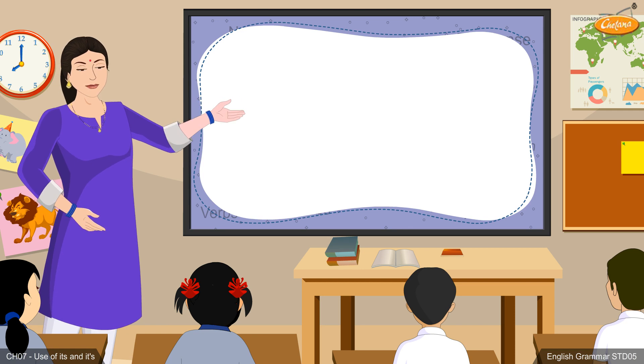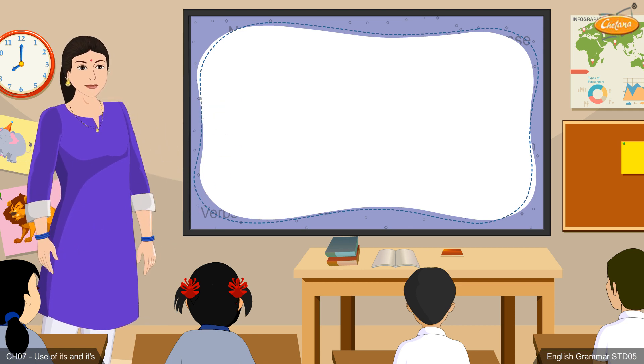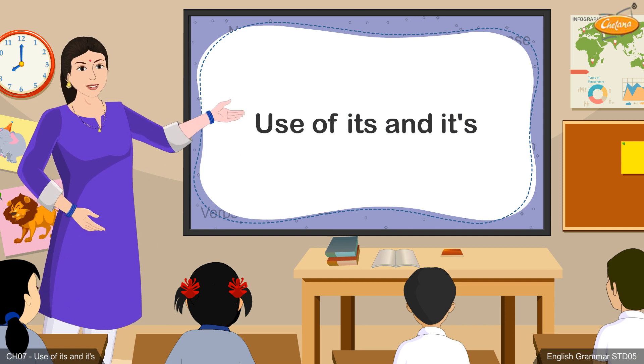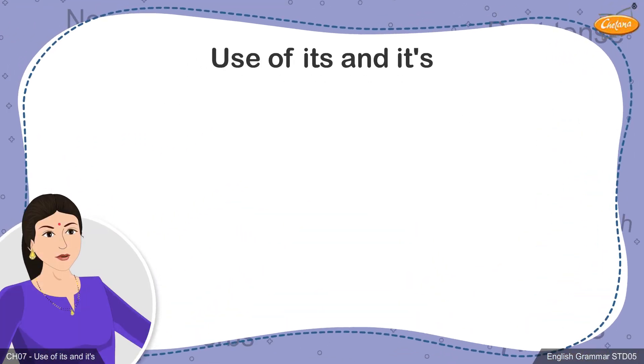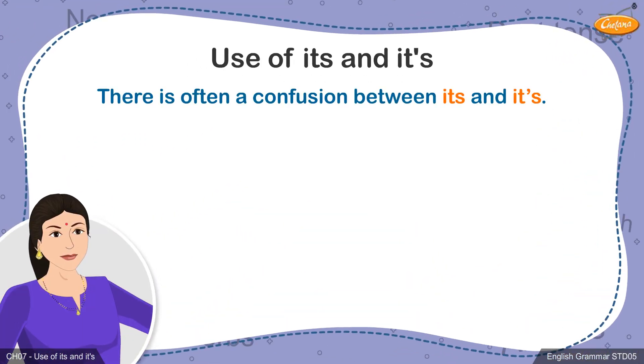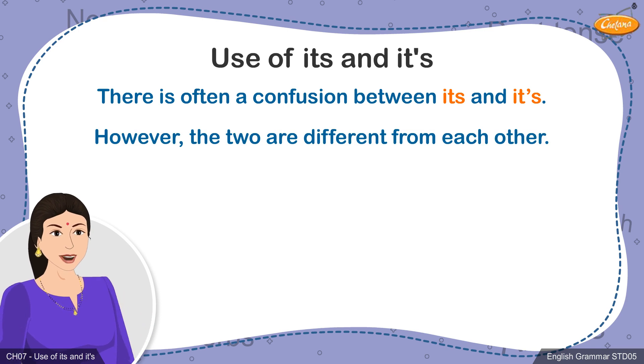we will be learning about an important concept, that is, the use of the pronoun its and the contraction form of it is, which is it's. The reason we are going to discuss the use of both its and it's with an apostrophe is that not only students but also many adults get confused with the difference in meaning of the two words.